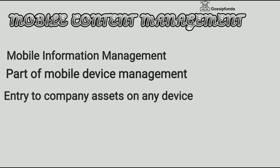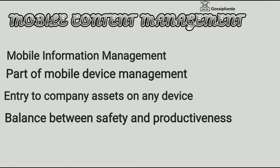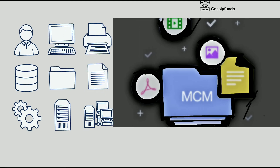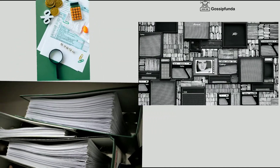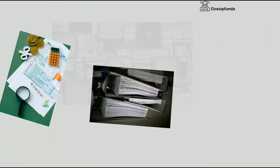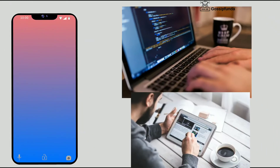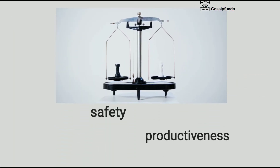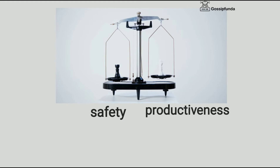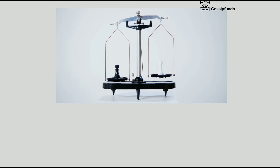Mobile content management, MCM, also known as mobile information management, is a part of maximum mobile device management solution. Its purpose is to offer stable access to company assets such as files, media, and documents on any cellular device — smartphones, laptops, and tablets. It enables a balance between safety and productivity.